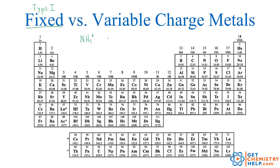Then there are variable charged metals, or what are called type 2. The charge, just like it says, can vary — sometimes they're 2+, sometimes they're 3+. So the fixed ones are easy to pick out.